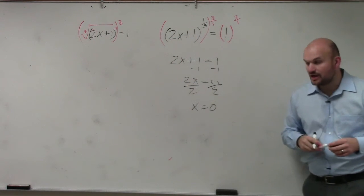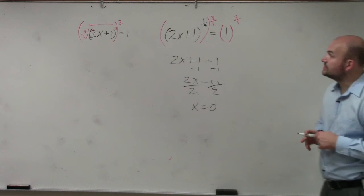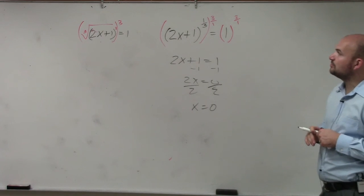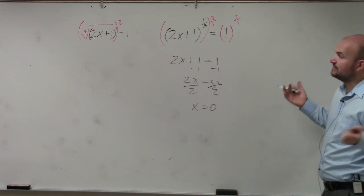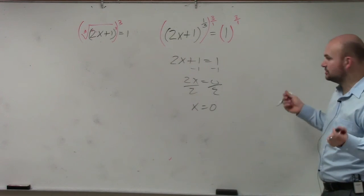And then let's just make sure we check our answer. 0, 2 times 0 is 0 plus 1 is 1. 1 raised to the 1 third power, again, is the same thing as the cube root of 1, which is still 1.